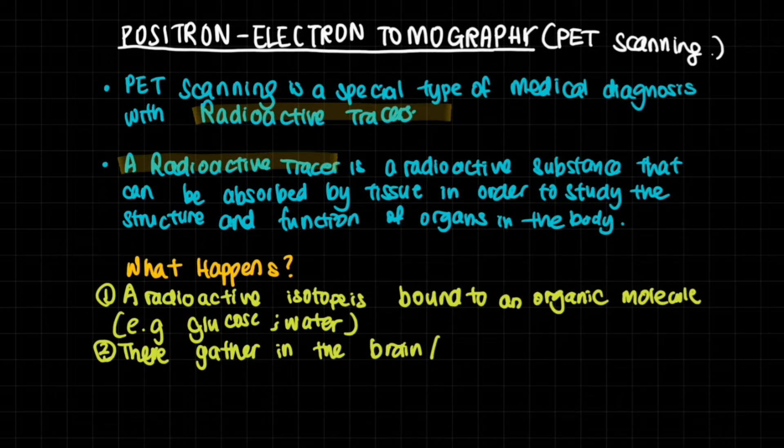PET scanning is a special type of medical diagnosis with radioactive tracers. A radioactive tracer is a radioactive substance that can be absorbed by our tissue in order to study the structure and functions of organs in the body.